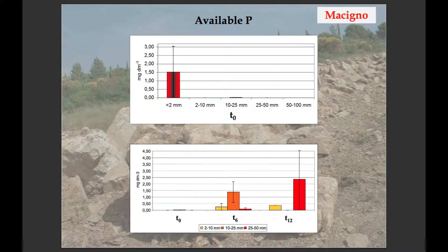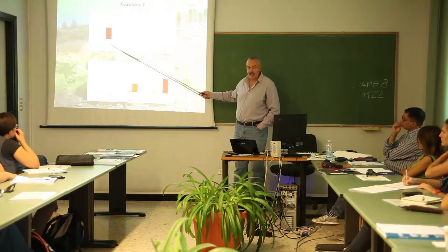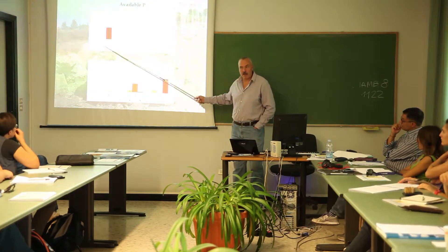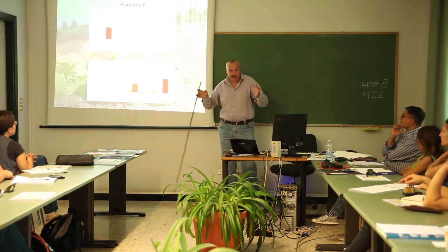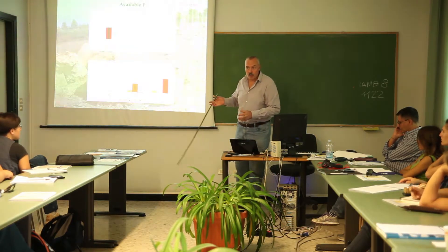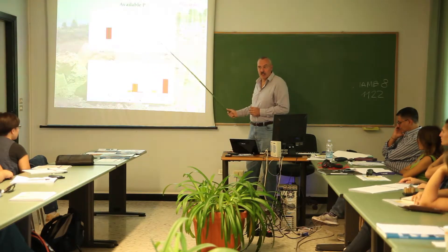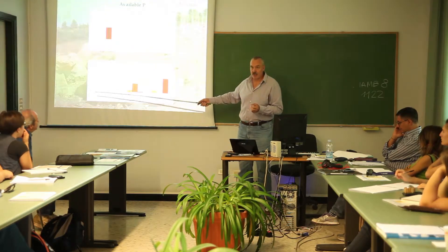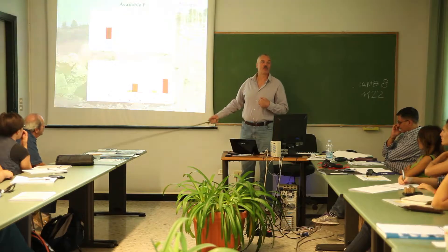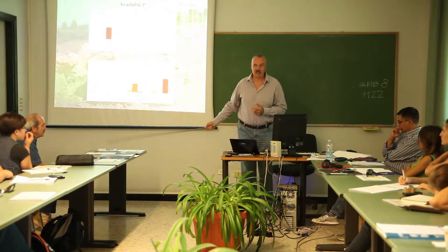Available phosphorus — and I mean available, not total. Available phosphorus is shown only in the less than 2 mm fraction. I will remind you that all these fractions come from the same boulders, right? The same boulders, crushed and sieved to produce these fractions. But this is evidently the effect of size: the smaller the size, the higher the possibility to release something — in this case, available phosphorus.